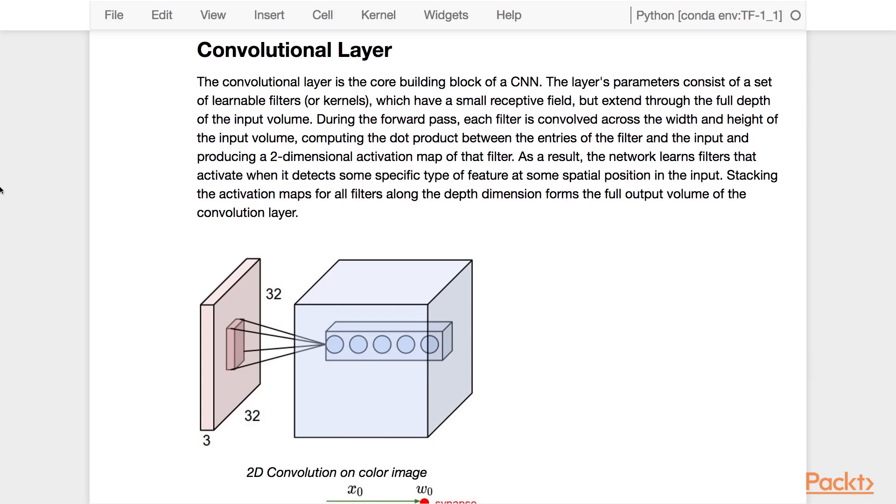As a result, the network learns filters that activate when it detects some specific type of feature at some spatial position in the input. Stacking the activation maps for all filters along the depth dimension forms the full output volume of the convolutional layer.